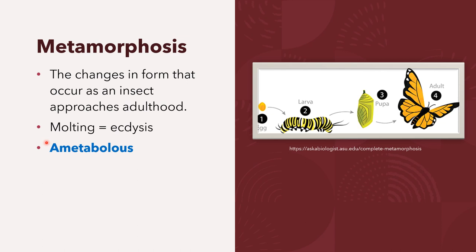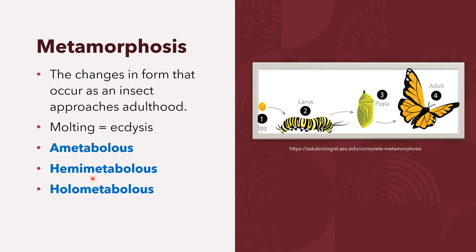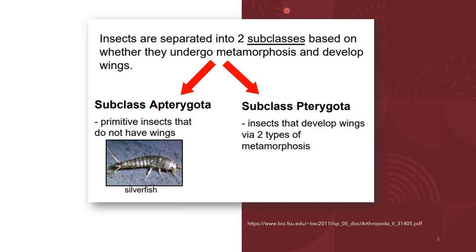Metamorphosis in arthropods has three types: the ametabolous type, the hemimetabolous type, and the holometabolous type of development. Insects are separated into two classes based on whether they undergo metamorphosis and develop wings: the subclass Apterygota and the subclass Pterygota.